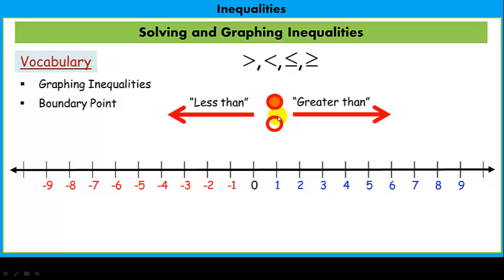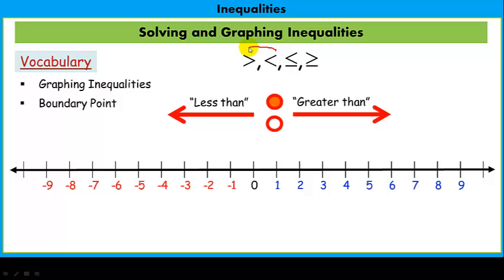We're going to use points on a number line, and we call these boundary points. One is filled in and one is open. The filled-in boundary point corresponds to less than or equal to or greater than or equal to — meaning we're including the boundary. If it's open, that refers to strict less than or greater than, meaning the boundary point is not included. We call the filled-in point inclusive and the open point exclusive.